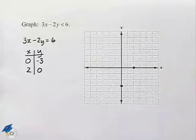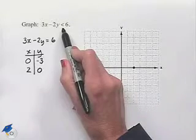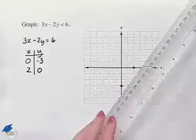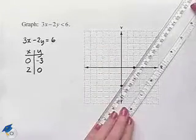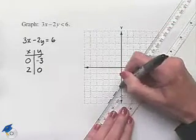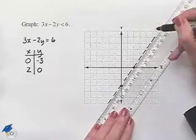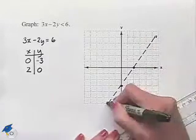Now we want to draw in our border, but before we draw it in, we want to make sure we pay attention to the fact that this is a strict inequality. What that tells us is that when we draw in our straight line, we want to draw it in as a dashed line. We want to indicate the border, but we do not want to include the line as part of our solution set.